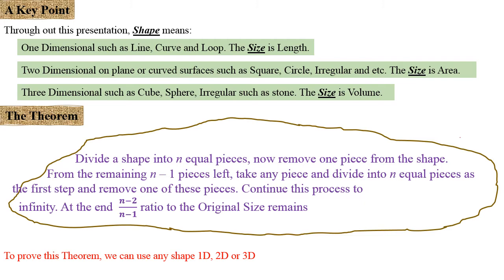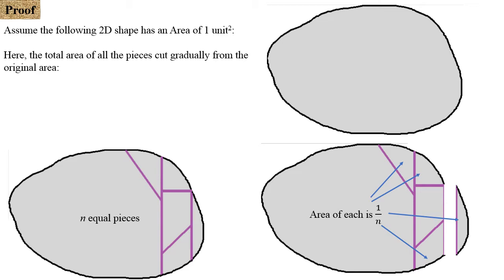Now I assumed for simplicity a 2D shape, any irregular shape, and I assumed this area is 1 unit squared. It doesn't matter, whatever area you assume you'll reach the same result. If you divide it into n equal pieces.